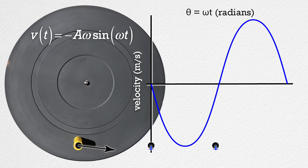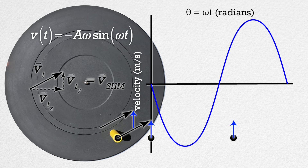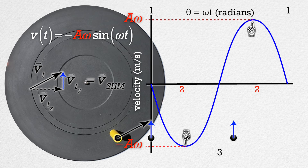Let's pause everything for a moment to illustrate that better. Do you see how the velocity of the object in simple harmonic motion is the vertical component of the tangential velocity of the yellow marker cap moving in circular motion? And you can see how the velocity has a value of zero at positions 1 and 3, and the velocity has its maximum magnitude at position 2. The velocity's maximum magnitude must equal amplitude times angular frequency. That's pretty cool.